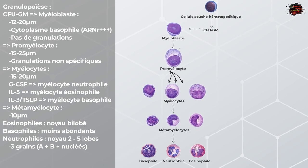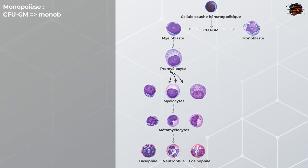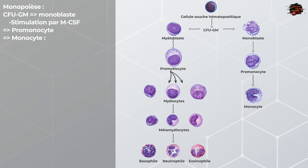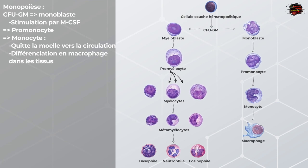Provenant d'un même progéniteur cellulaire, les CFU-GM donnent naissance au monoblaste sous contrôle du Monocyte Colony Stimulating Factor. Les monoblastes sont plus ou moins similaires aux myéloblastes. Ils vont se différencier en promonocytes, qui se différencient à leur tour en monocytes. Ces monocytes vont quitter la moelle osseuse vers la circulation et rejoindre les tissus et les organes afin de se différencier en macrophages.